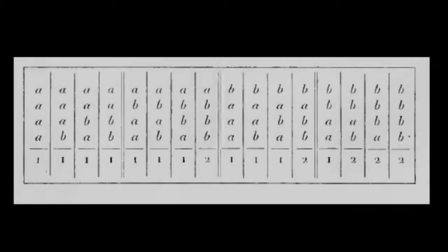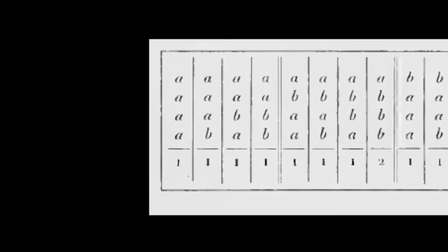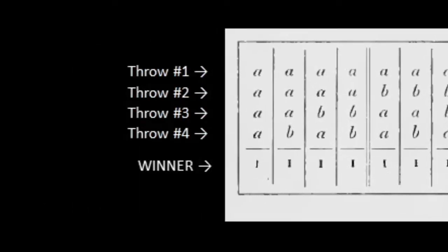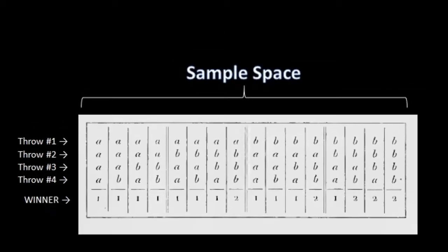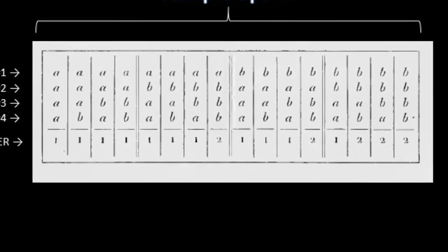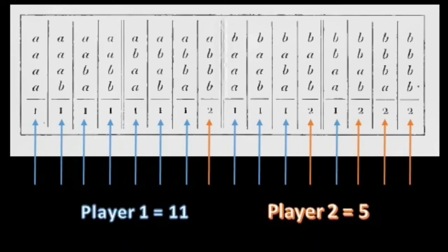From this diagram, we can see Fermat's method. Instead of deriving complicated formulas, he simply listed all of the possible outcomes. In modern terms, we call that defining the sample space. From there, he counted the number of outcomes favoring the first player and the number favoring the second. The result — 11 for the first player and 5 for the second — matched what Pascal found using his method.